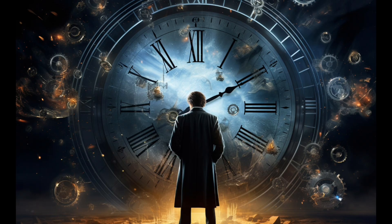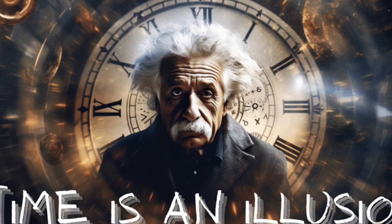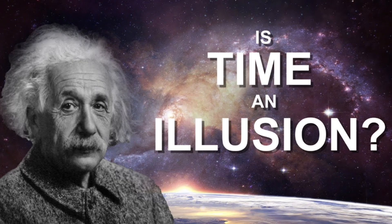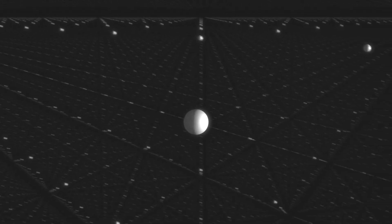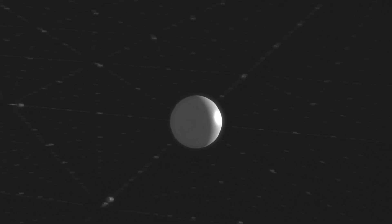The Block Universe Theory: Some physicists propose a theory called the Block Universe. In this model, past, present, and future all coexist simultaneously. Imagine the universe as a loaf of bread, with each slice representing a moment in time. From this perspective, the flow of time is an illusion. We simply perceive ourselves moving through these slices, but in reality, all of them already exist.